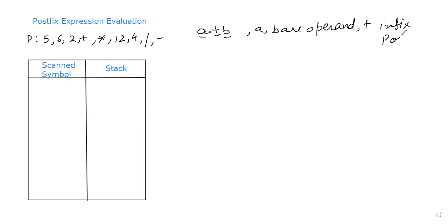Whenever this appears after the operands, like if I write it as a, b, plus, then it will be called the postfix expression. Similarly, whenever plus or operator appears before the operands, then we call it the prefix expression.